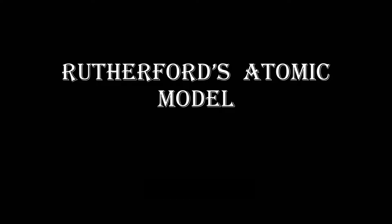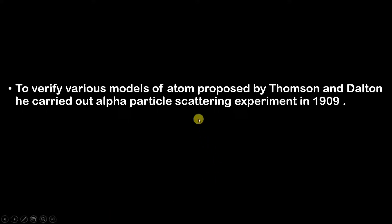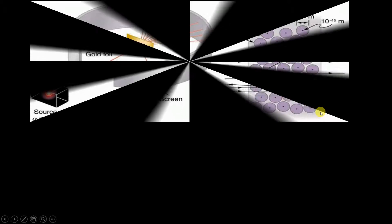Welcome back to the channel. In this video we will be understanding Rutherford's atomic model. Initially, Dalton and Thomson proposed a model of an atom. To check whether the proposed model is right or wrong, Rutherford carried out an experiment known as the scattering experiment, which was carried out in 1909. First we will understand its construction.